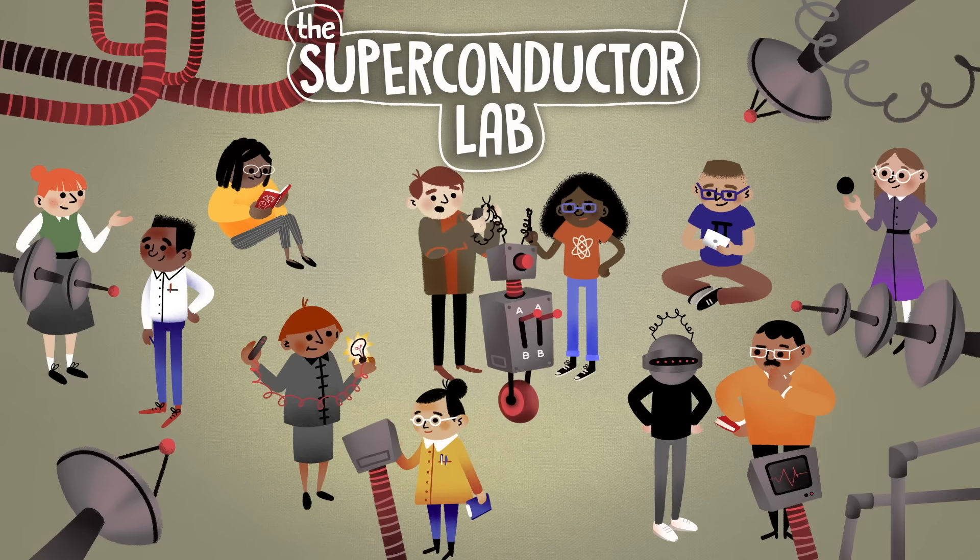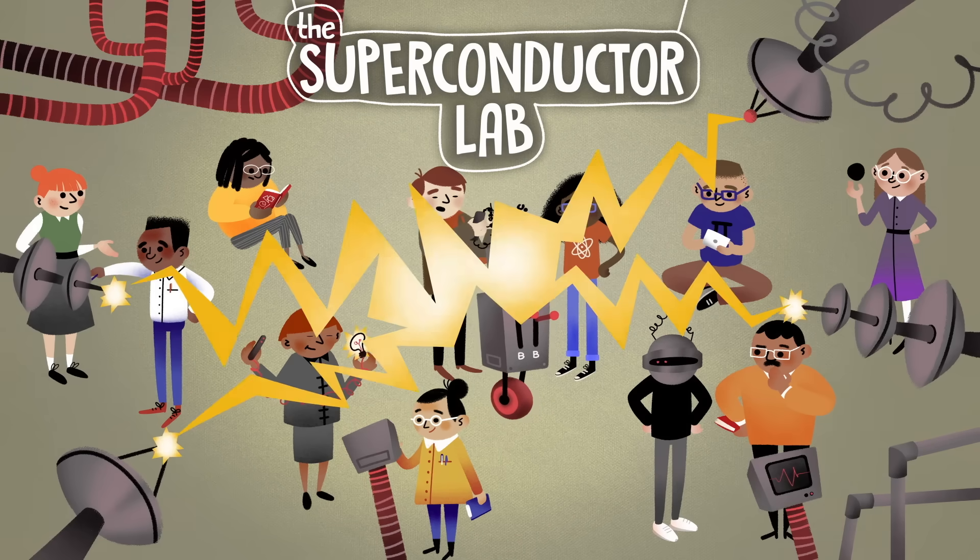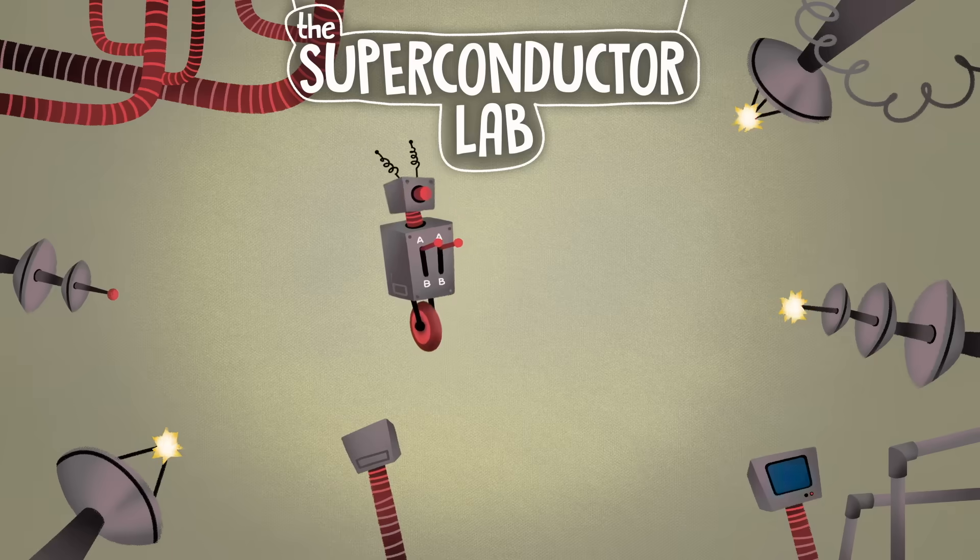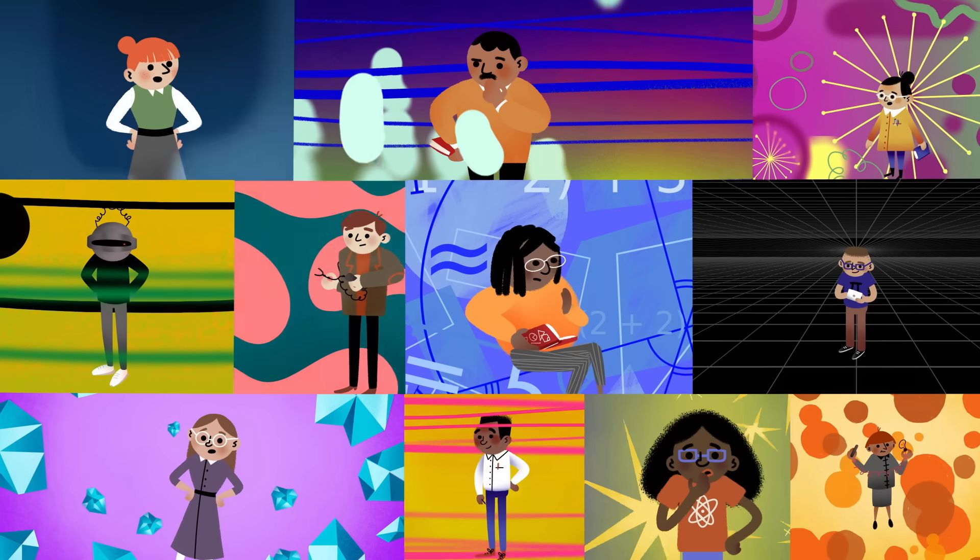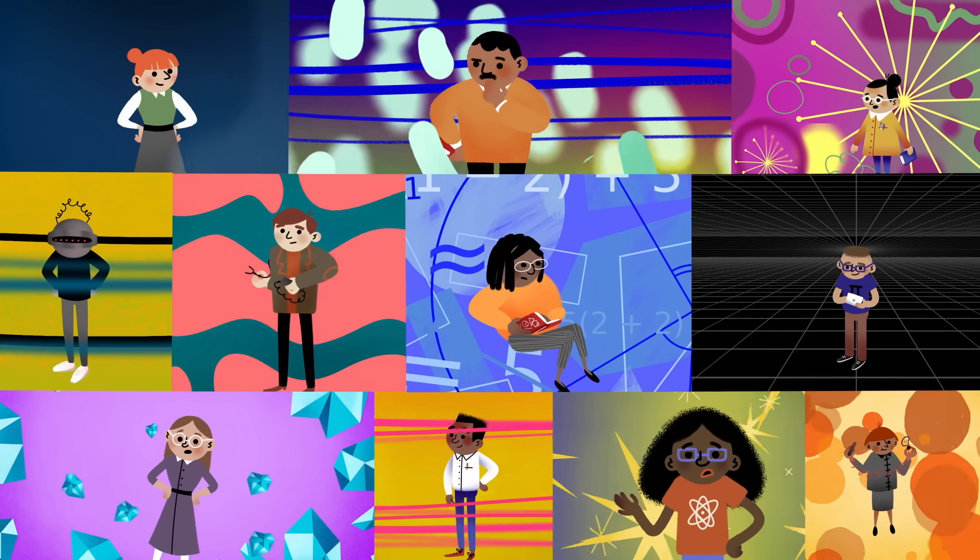It was a normal Tuesday at the superconductor, until a bug in the system created a small situation. Now your team is trapped in 11 separate pocket dimensions.